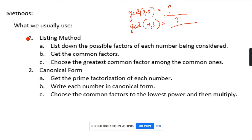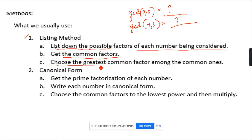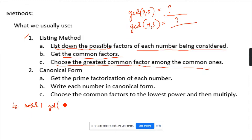So let's start with the first method: the listing method. List down the possible factors of each number being considered, get the common factors, and choose the greatest common factor among them. Example for Method 1: find the GCD of 36 and 48.